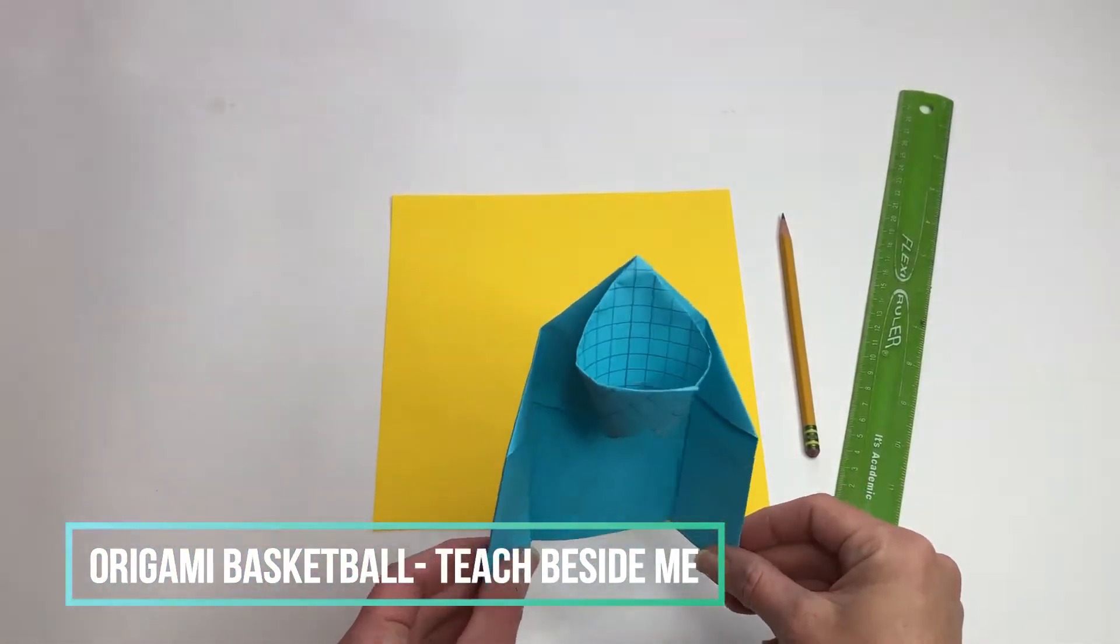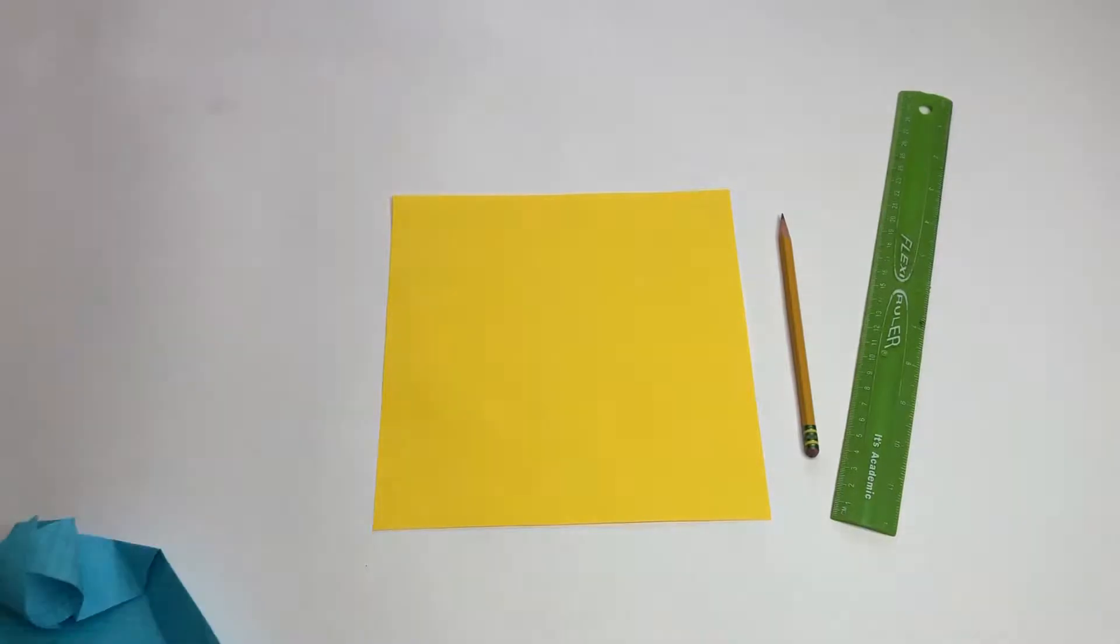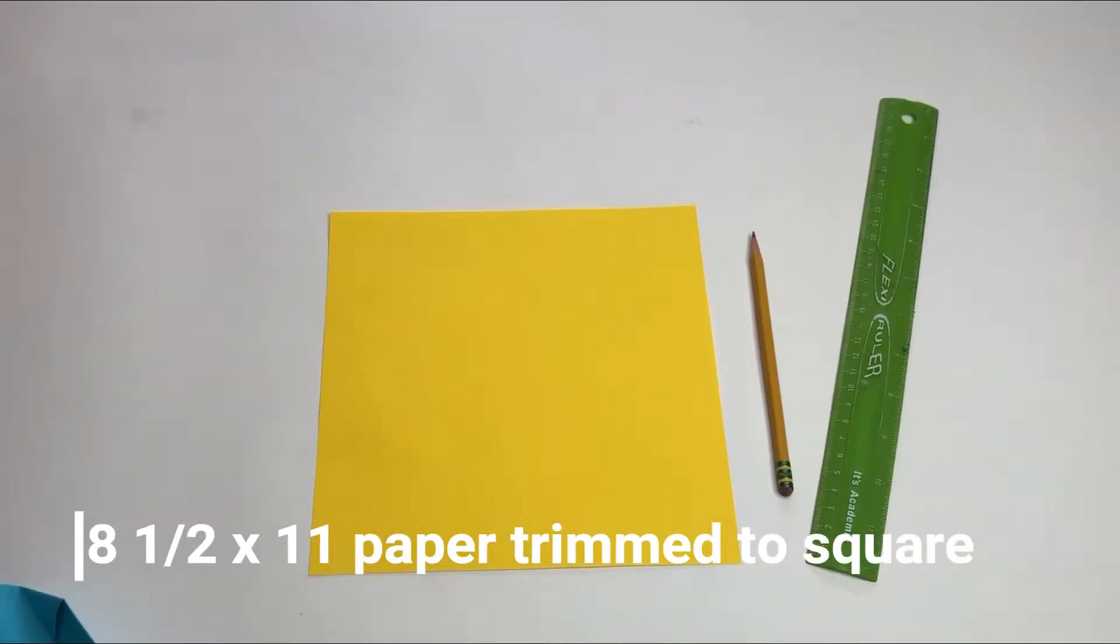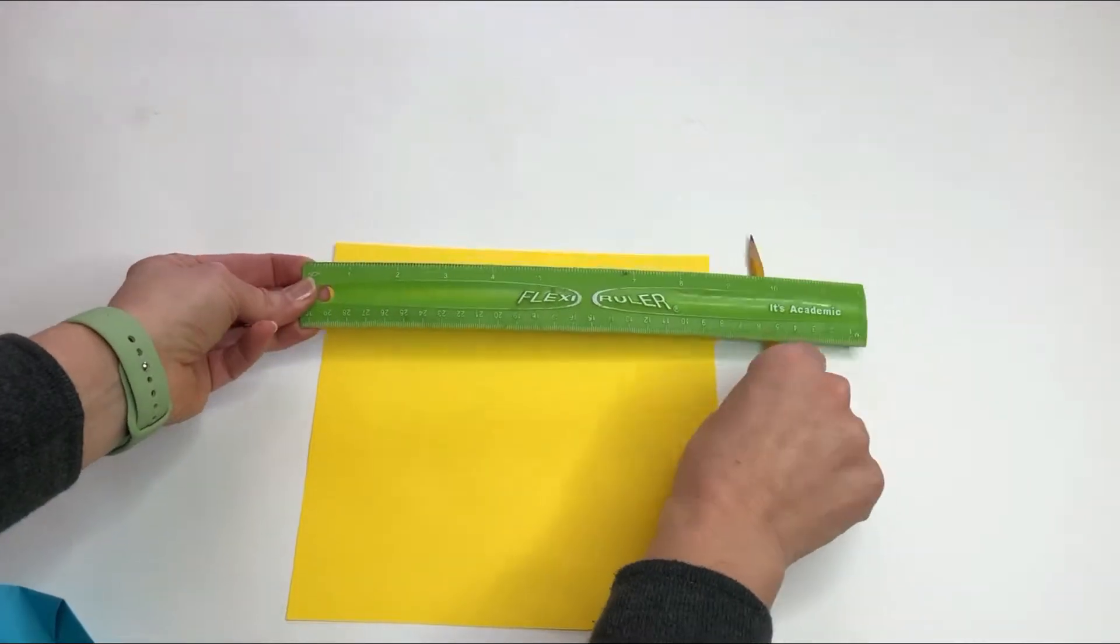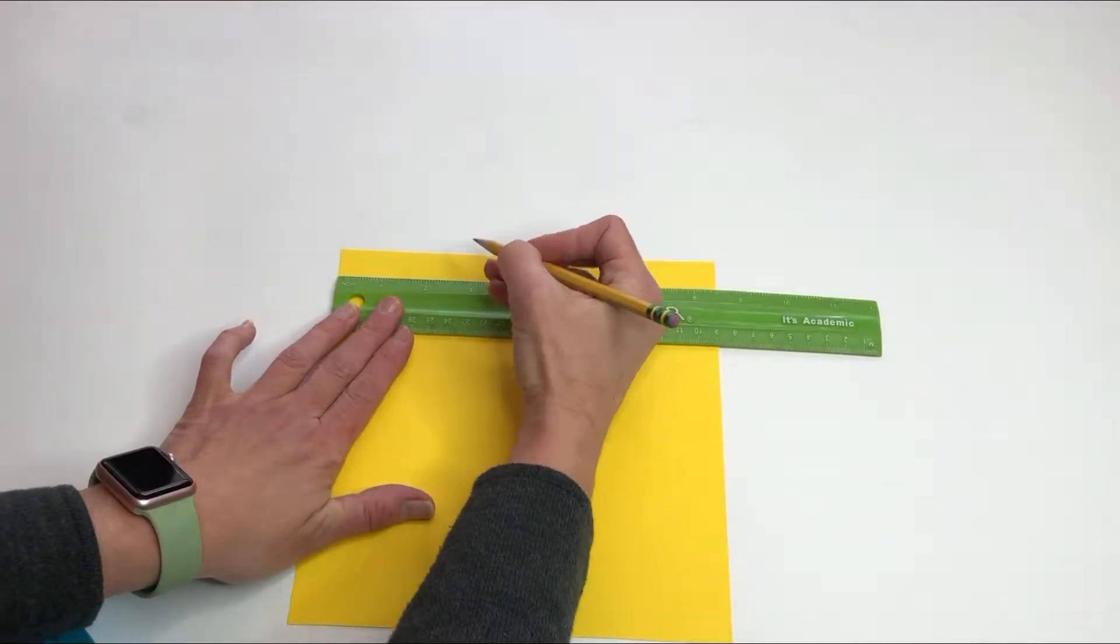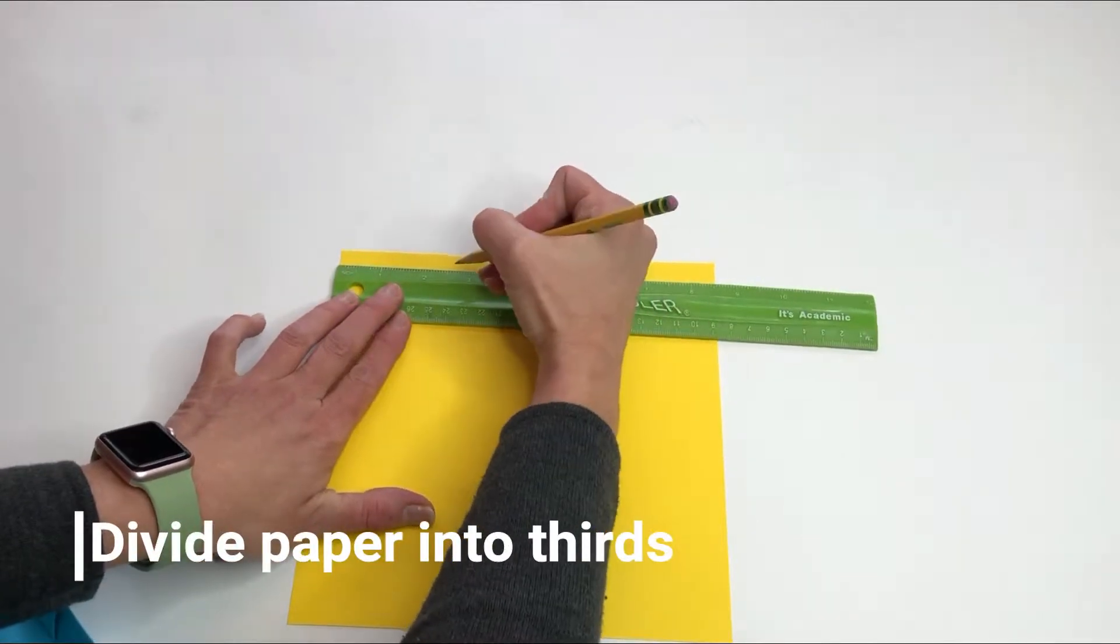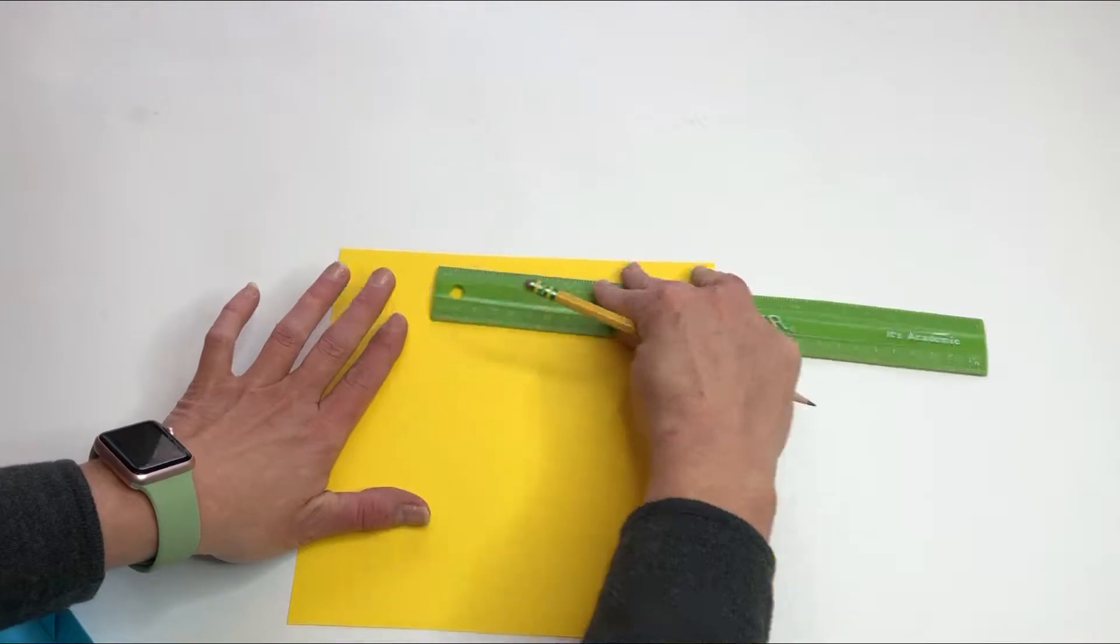I'm going to show you how to make an origami basketball hoop today. Start by dividing your paper into even thirds. This is an eight and a half inch paper, so I'm doing about two and a little past three quarters for my lines.